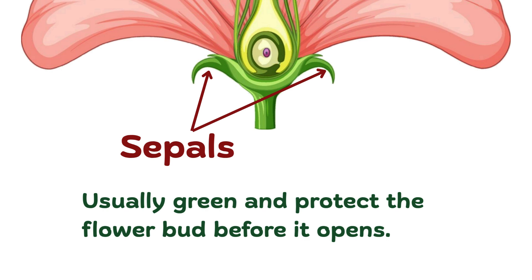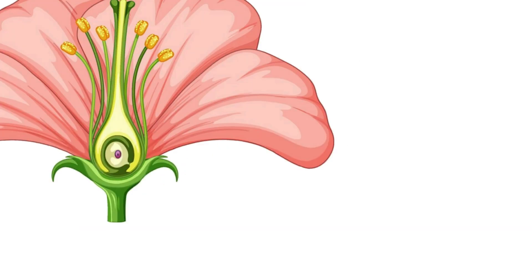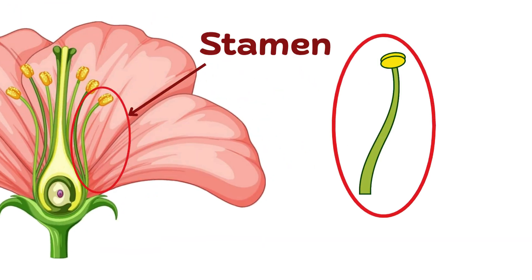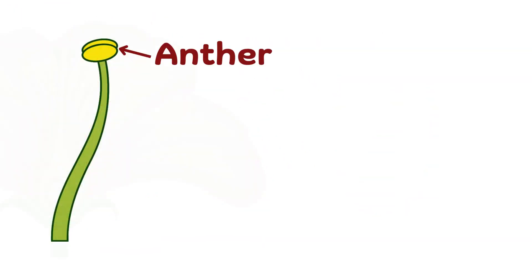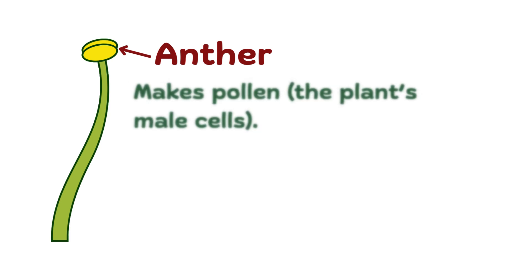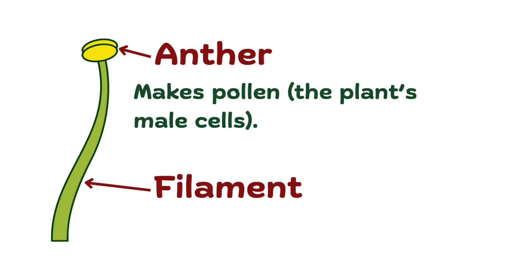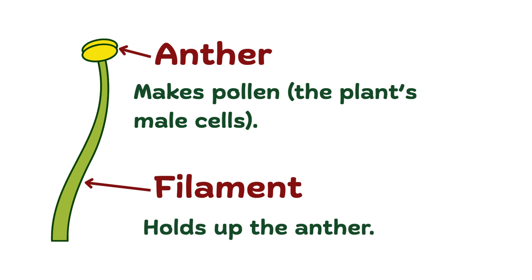Now for the male part of the flower — the stamen. It has two parts: the anther, which makes pollen, the plant's male cells, and the filament, a thin stalk that holds up the anther.